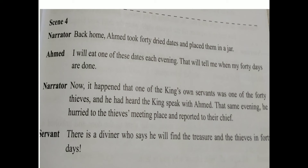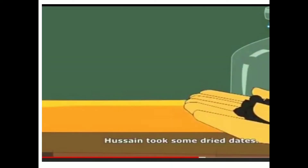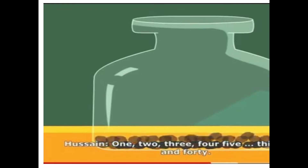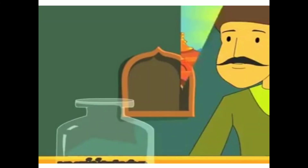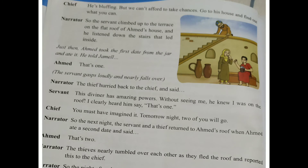Chief: 'He is bluffing, but we can't afford to take chances. Go to his house.' So the chief sent a spy. That night, one of the thieves climbed up to the roof of Ahmed's house. Just then Ahmed took the first date from the jar and ate it and told his wife Shamina: 'That's one.' The servant gasped loudly and nearly fell over — he was shocked that without seeing him Ahmed could say 'he is one.'